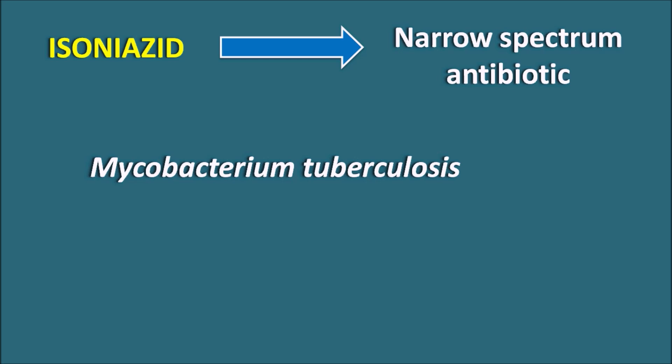Today in this video let us discuss how Isoniazid acts as a narrow spectrum antibiotic and how it acts in mycobacterial tuberculosis infection, what are the side effects, drug interactions, contraindications, and clinical use of this drug.